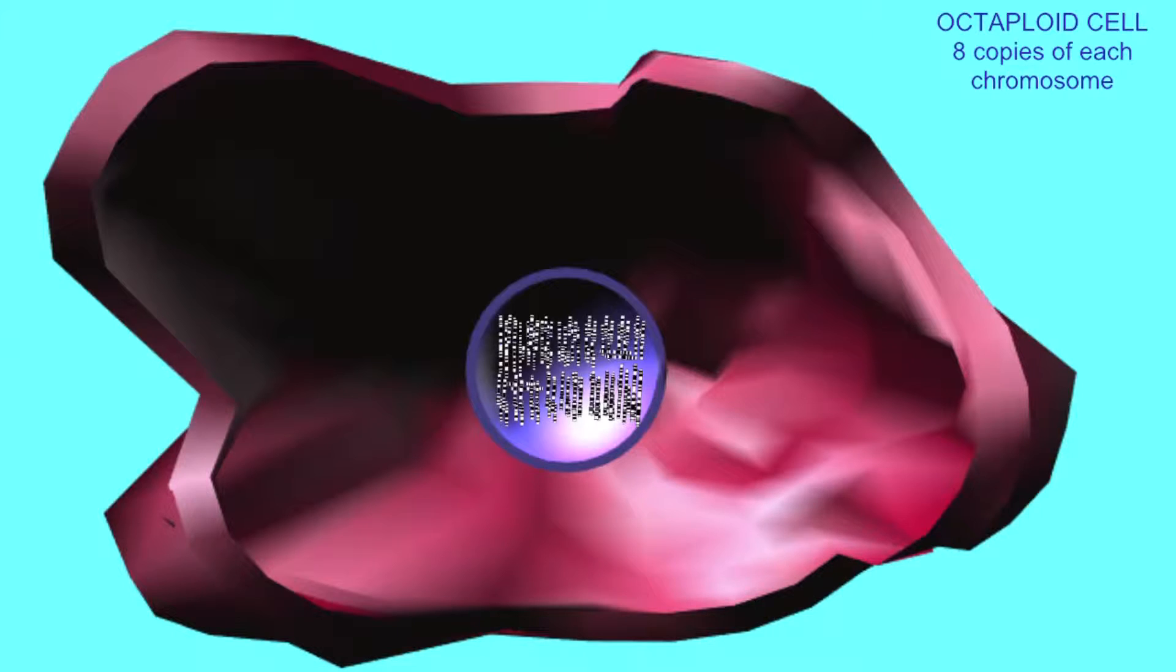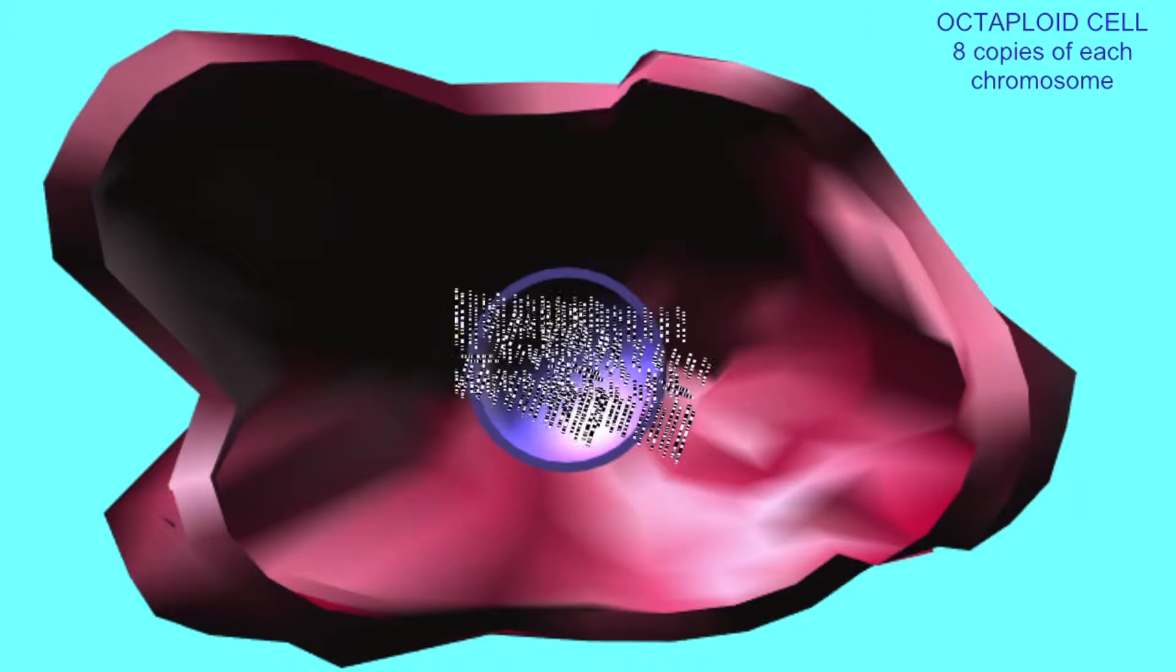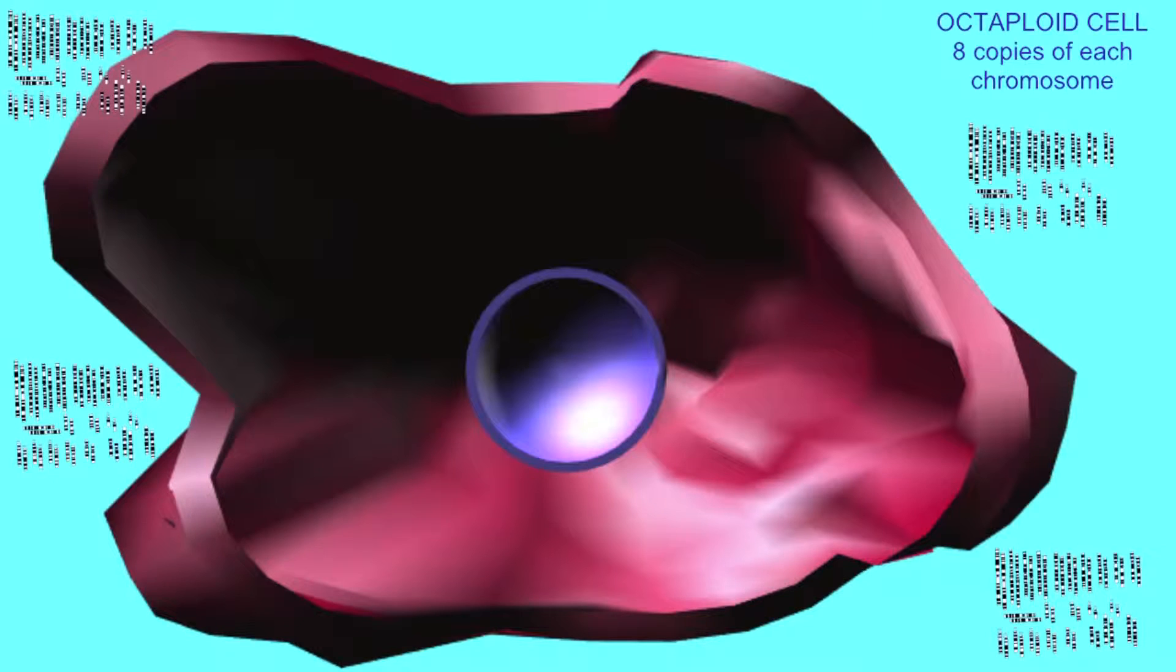Other possible chromosome counts exist, such as hepatocytes which are octoploid with eight copies of each chromosome. And hepatocytes may be aneuploid in which some of their chromosomes are either missing or extra chromosomes have been added.